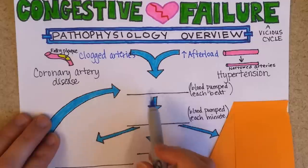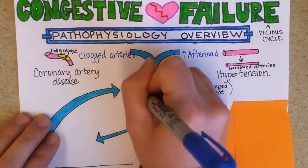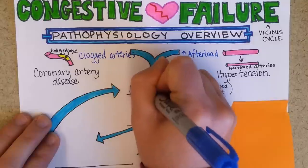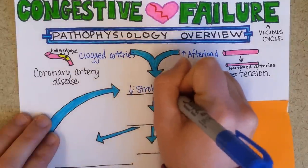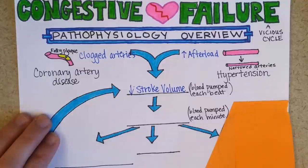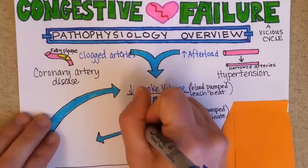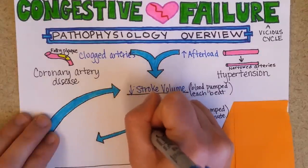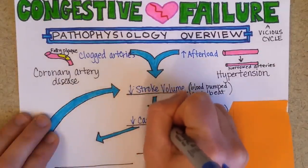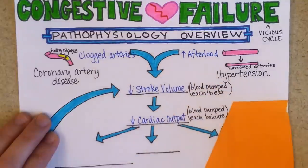This weakening of the heart decreases stroke volume. Stroke volume is the amount of blood pumped by the heart with each beat. So if stroke volume goes down, down goes cardiac output, which is the amount of blood that's pumped by the heart in a minute.